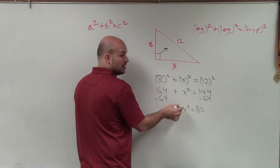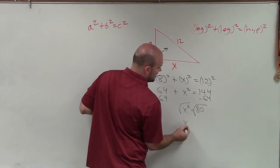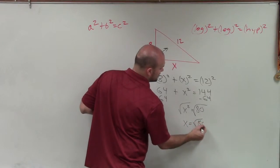To solve for x, I need to undo the squaring. So I'll take the square root of both sides. And I have x equals the square root of 80.